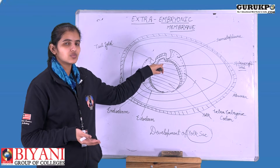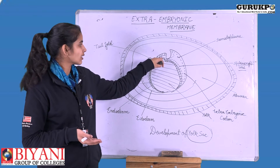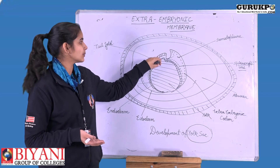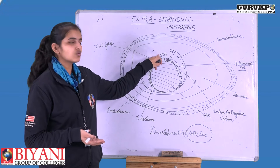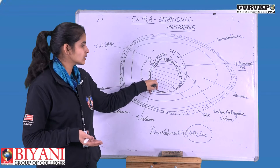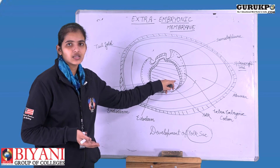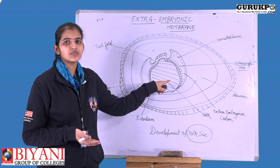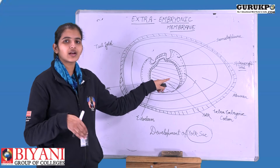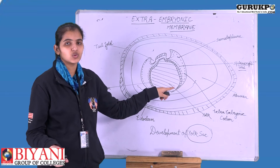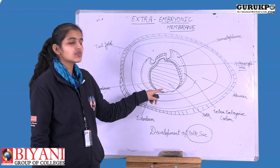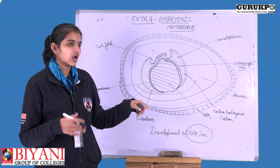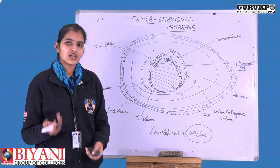We need a membrane that provides specific permeability for the embryo's development. The yolk must be transferred to the embryo for its proper development — if the yolk is not transferred, then the yolk is useless. Thus the yolk sac should have the ability to absorb or transfer the yolk to the embryo. These are the properties required in the yolk sac.